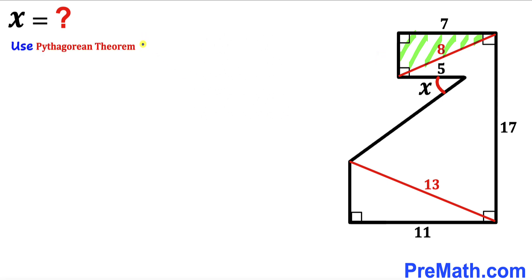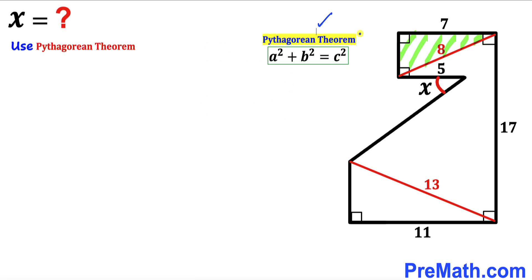We are going to apply the Pythagorean theorem on this triangle. The Pythagorean theorem is a² + b² = c². In our case the hypotenuse is 8, and I'm going to label this unknown side length as lowercase a. Filling in the formula, we get a² + 7² = 8².